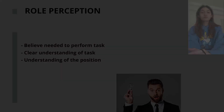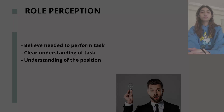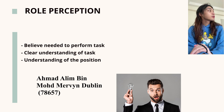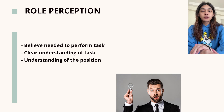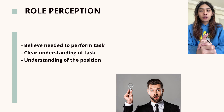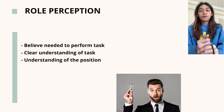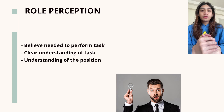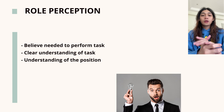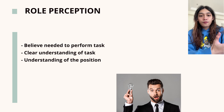Assalamualaikum, my name is Angah Elim bin Mohammed, with metric number 7657, and I will be talking about role perceptions. Role perceptions are a set of beliefs regarding the behaviors needed to be performed to achieve a desired outcome. It is also used to give employees a clear understanding of their part in the organization. The criteria for role perceptions are: to understand the role or position that they hold, to understand the importance of the job they are performing, and to give employees a picture of the required behavior needed to perform their job in a specific manner.